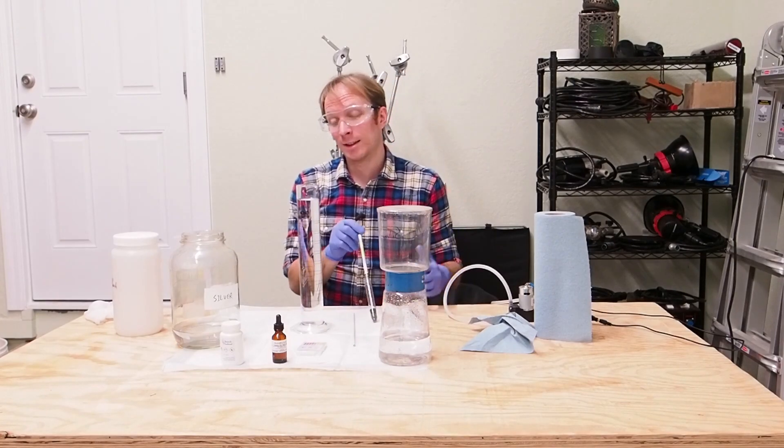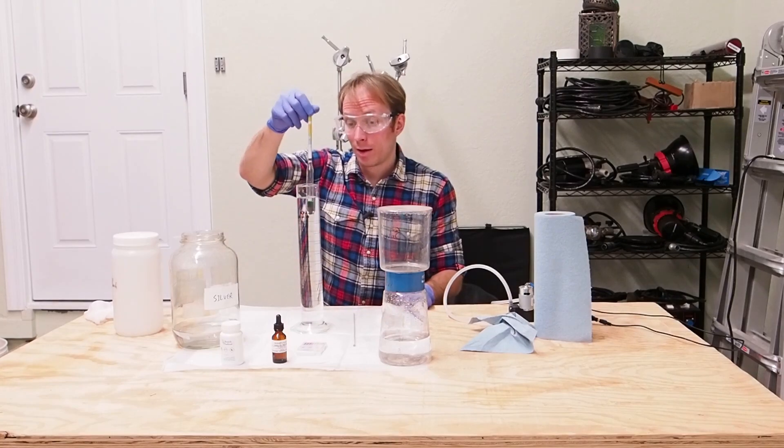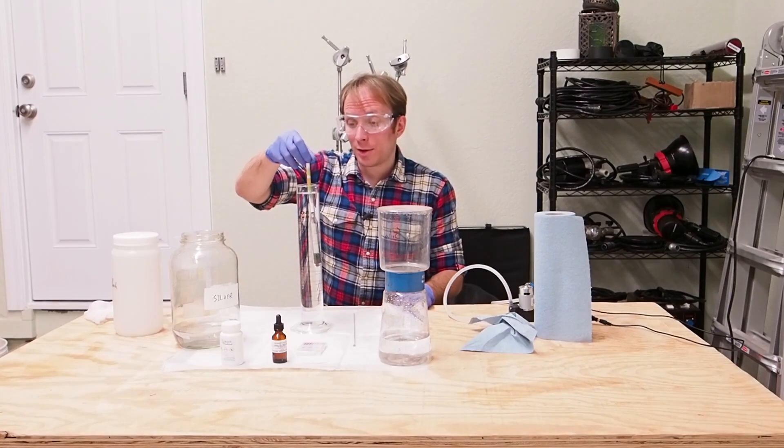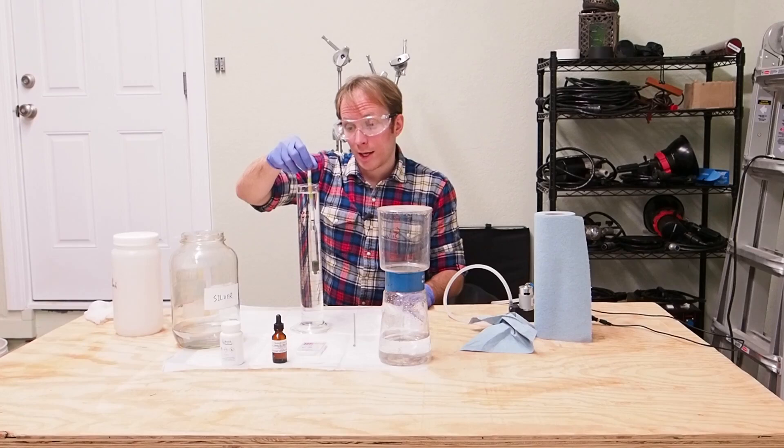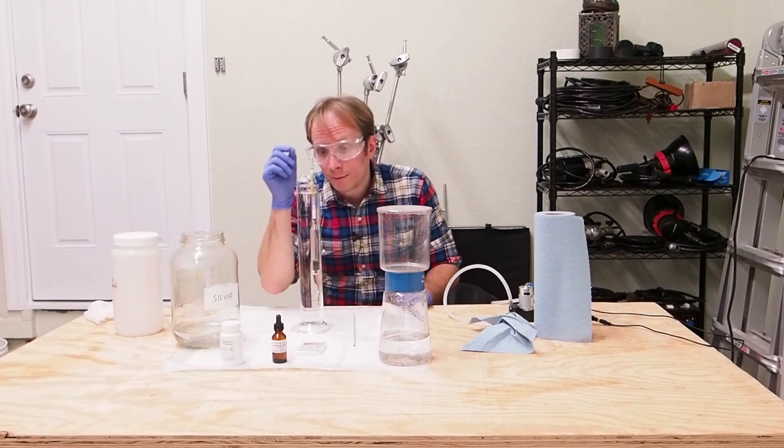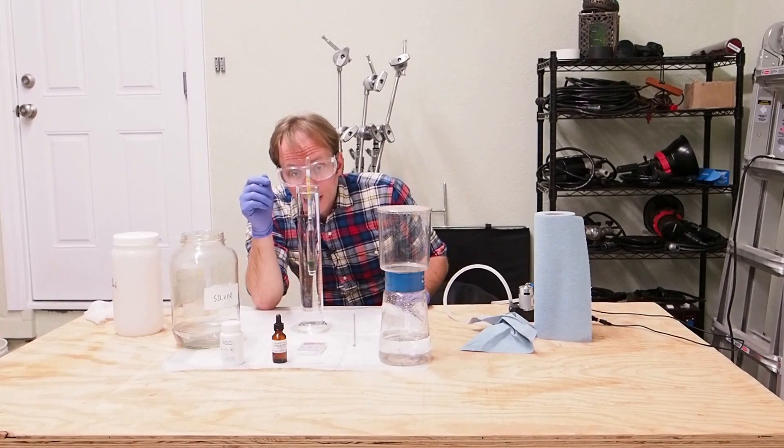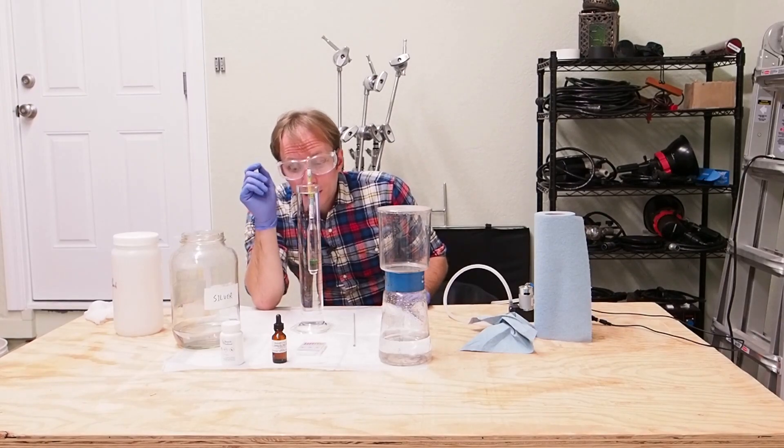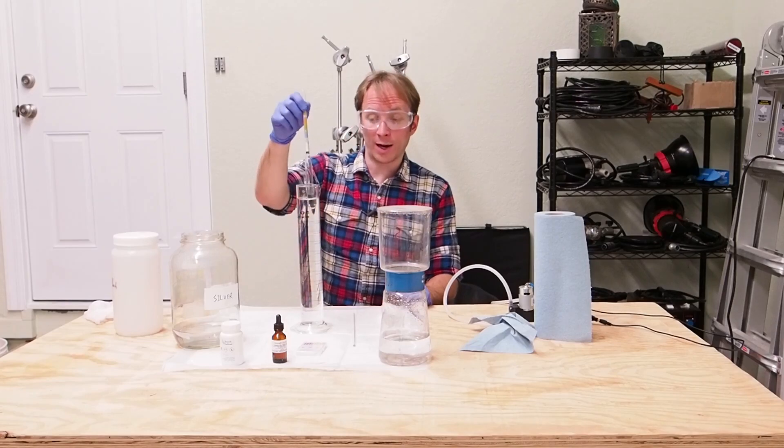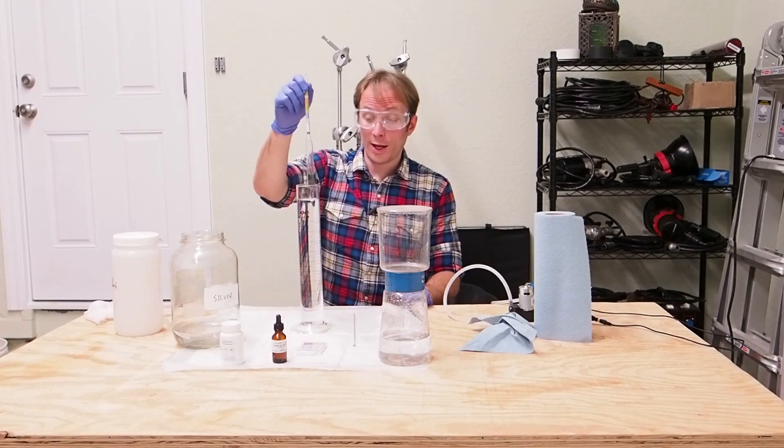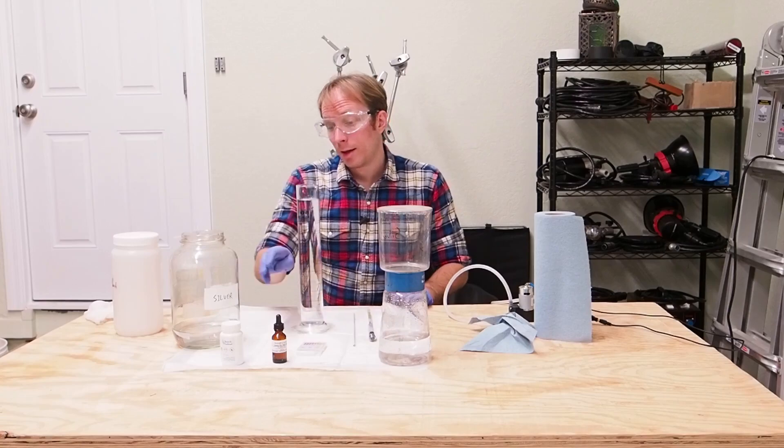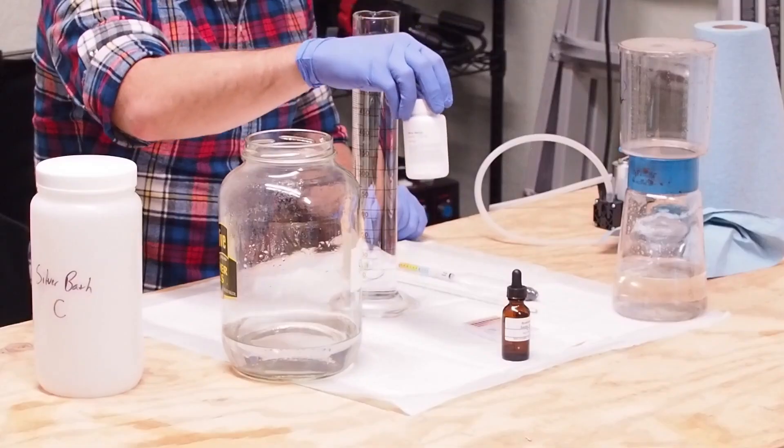So, it basically comes down to how much silver have you lost from preparing plates versus how much water have you lost from sunning the silver bath. If you find yourself with too low of a specific gravity, then you'll want to do the opposite of what I'm doing here and add silver nitrate crystals.